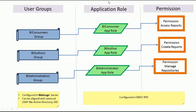Within OBIEE, in the RPD admin tool, access is controlled through application roles and permissions. These application roles have to align with user groups, because when a user logs into OBIEE, the first thing assigned to them is a user group — either through the internal LDAP in WebLogic, or through an external LDAP like Active Directory or Oracle Internet Directory. The user group basically controls authentication.